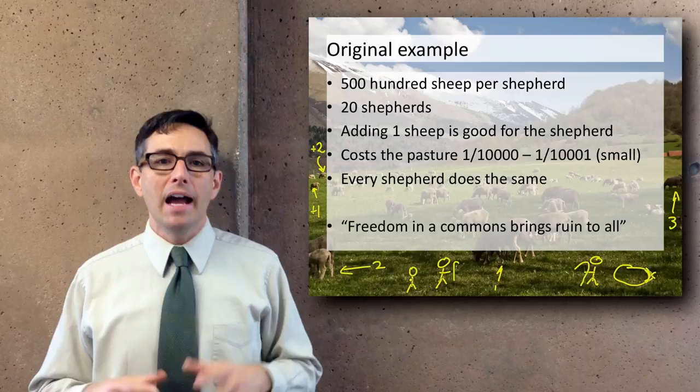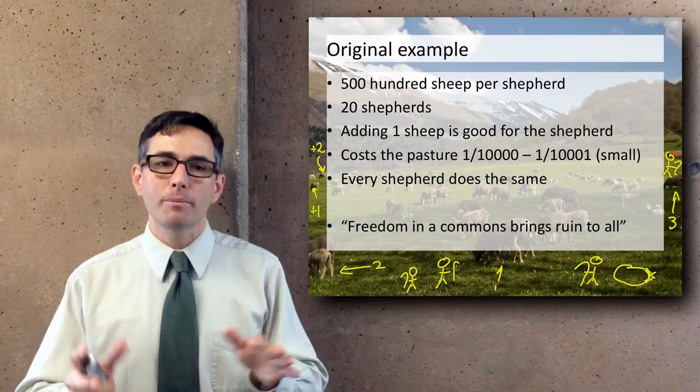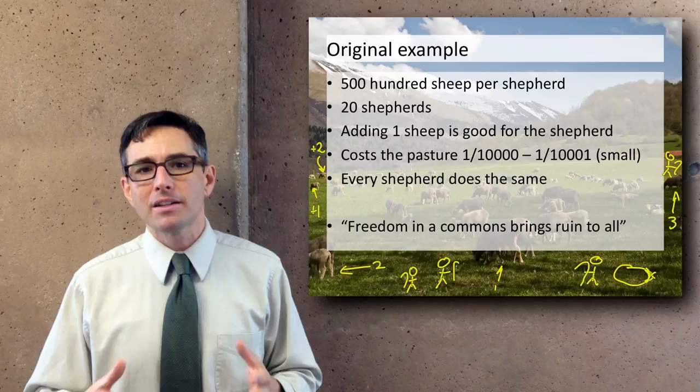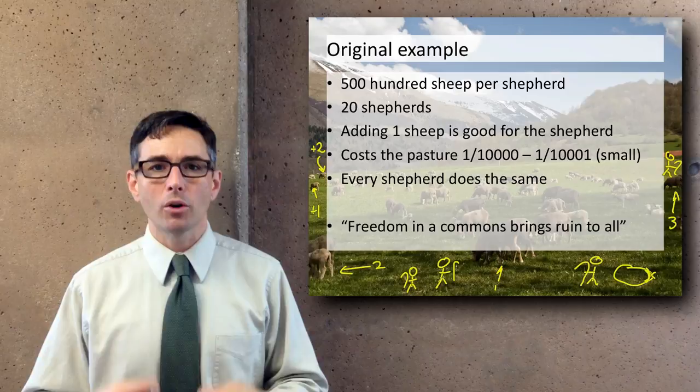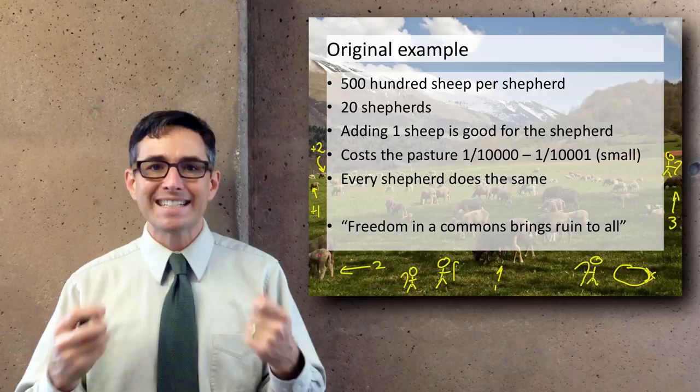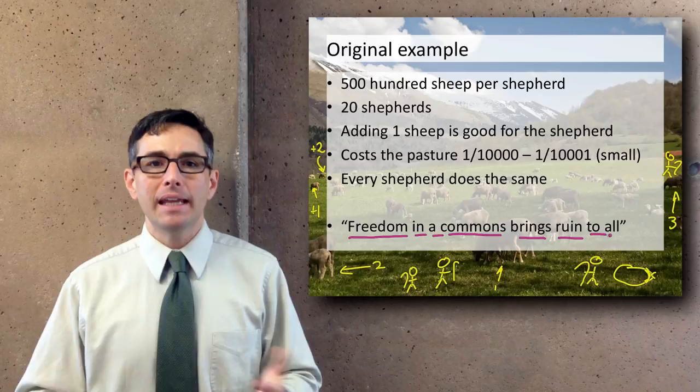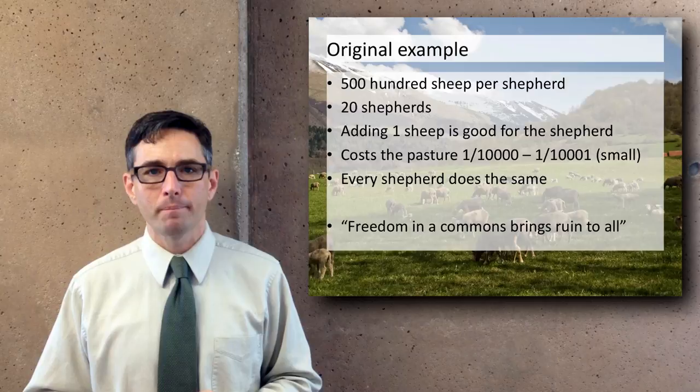Of course, at the same time, all the other shepherds are reaching the same conclusion. So each individual is reaping the full benefit of having another sheep, but the costs are being borne by the whole community. And that's the tragedy. Each shepherd is locked into a market-based system in which the choices they make to individually benefit themselves are destroying the very system they depend on — which is the commons. The quote from the article is: 'freedom in a commons brings ruin to all.'